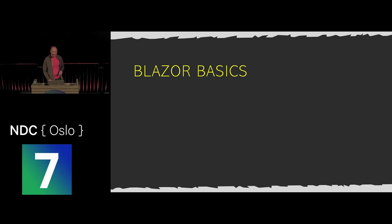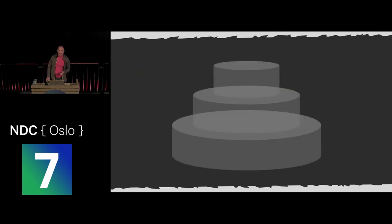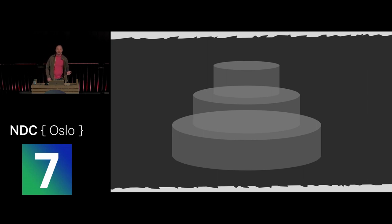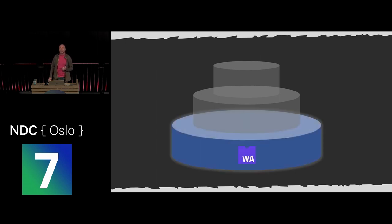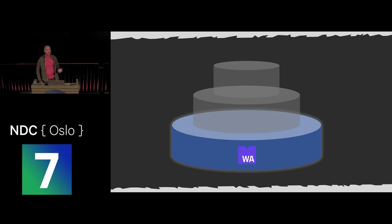Now let's look at how this actually works behind the scenes. I've been saying we can run .NET code in the browser — but how exactly? I've been mentioning WebAssembly. To make your code run in the browser, we use a stack of three technologies, and the bottom layer is WebAssembly.